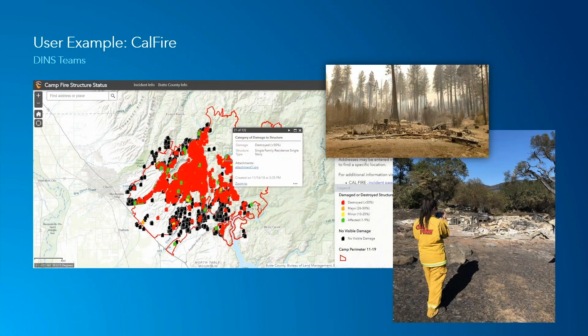There are great case studies of this in action. At the state level, Cal Fire in California is an excellent example — they deployed mobile damage assessment capabilities across all of California, including the Camp Fire in Butte County. You can see field personnel on mobile devices creating the historic record with documented damage and photographic evidence, then using that data internally to drive the disaster declaration and share recovery information directly with impacted citizens.